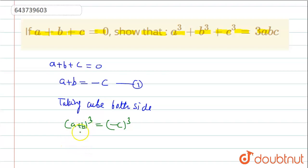Formula of (a+b)³ is a³ + b³ + 3ab(a+b) = -c³.